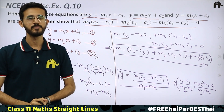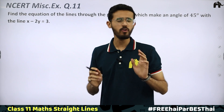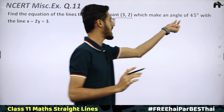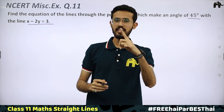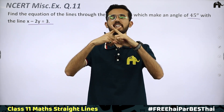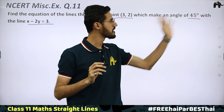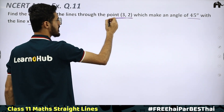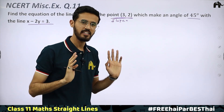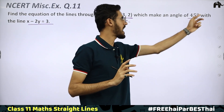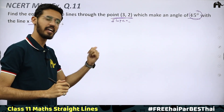Question No. 11: Find the equation of the lines through the point (3, 2) making an angle of 45° with the line x − 2y = 3. We have θ = 45°. The formula relating two lines' slopes and the angle between them is: tan θ = |( m₂ − m₁)/(1 + m₁m₂)|.